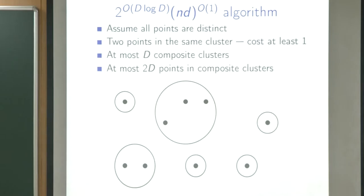We want to do something better, of course. We now present an algorithm running in time D^D (with some constants) and polynomial in n and d. So if D is small, this is a good running time.